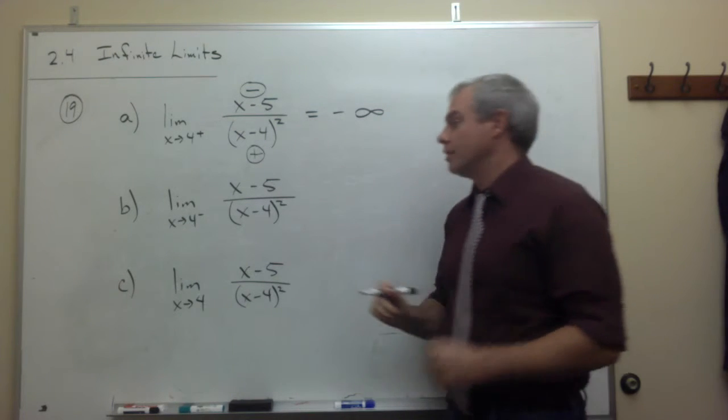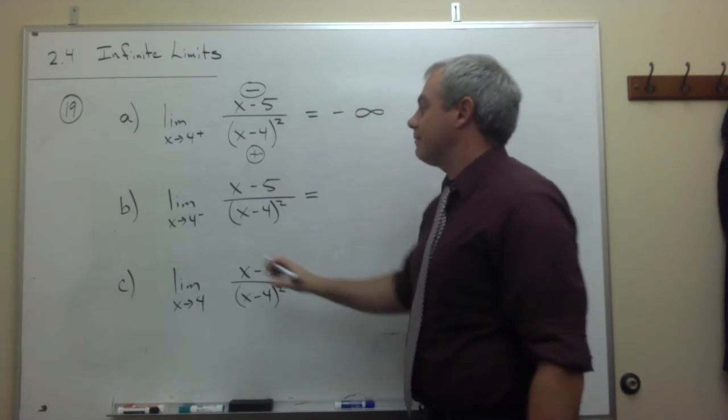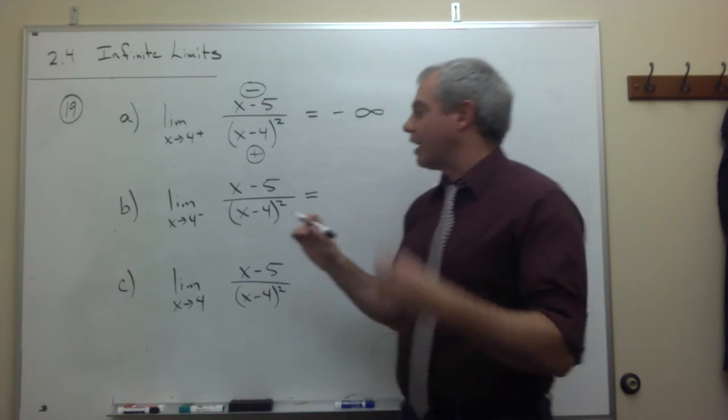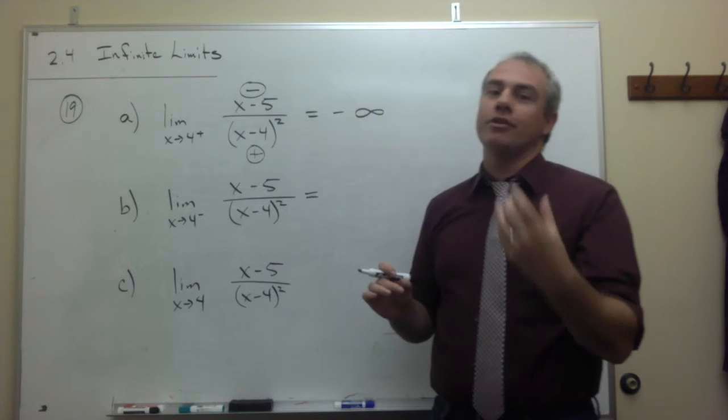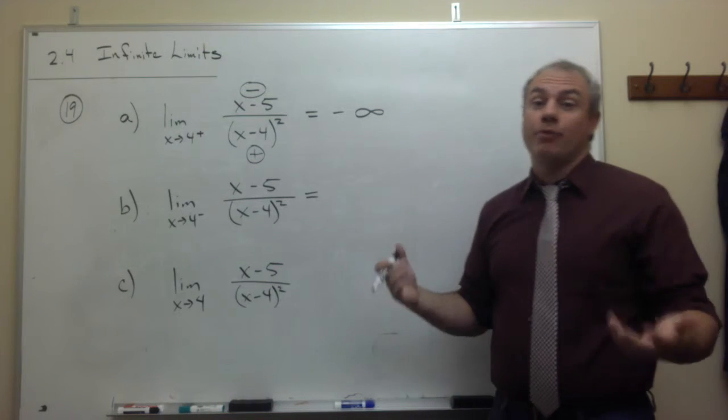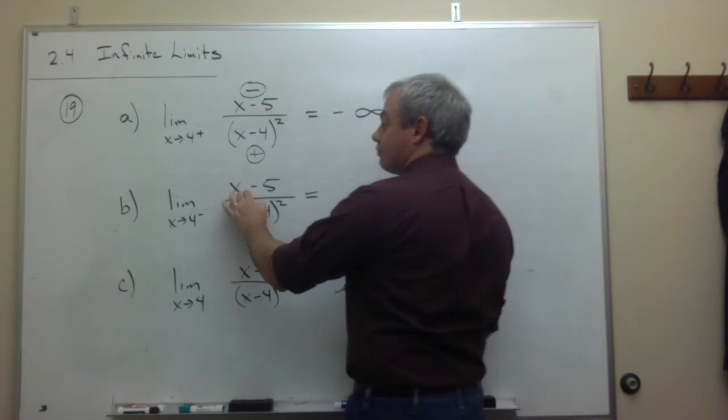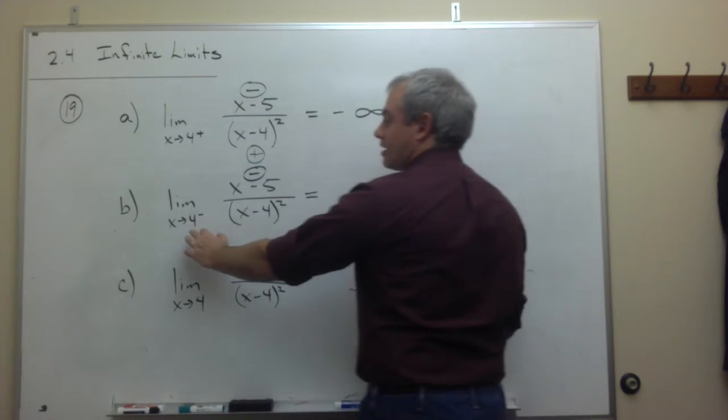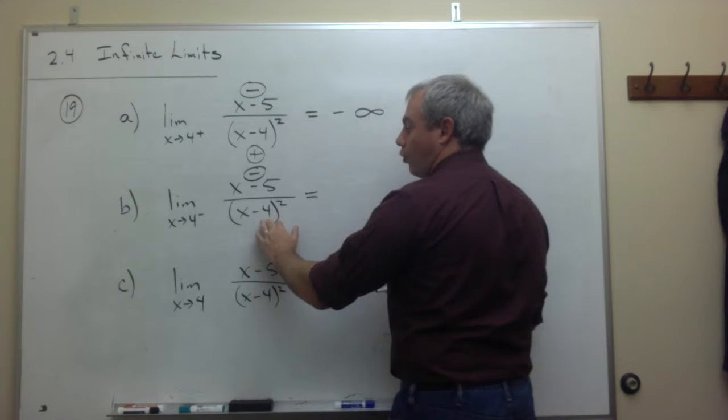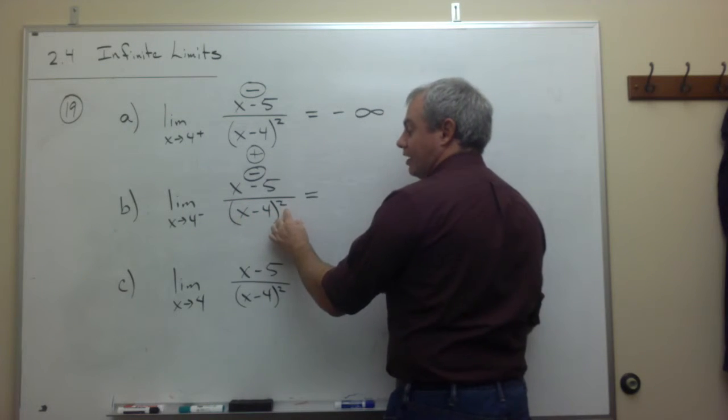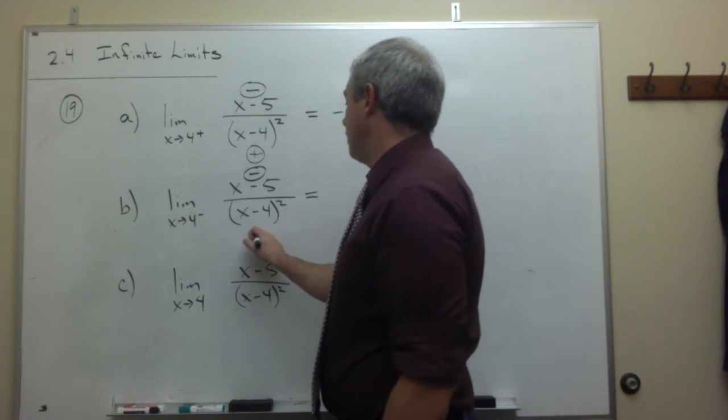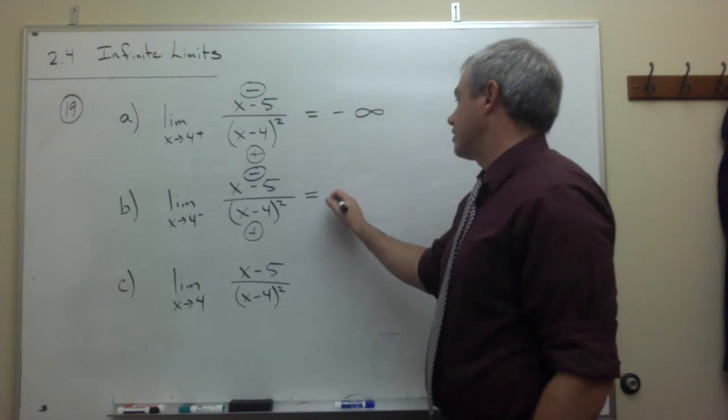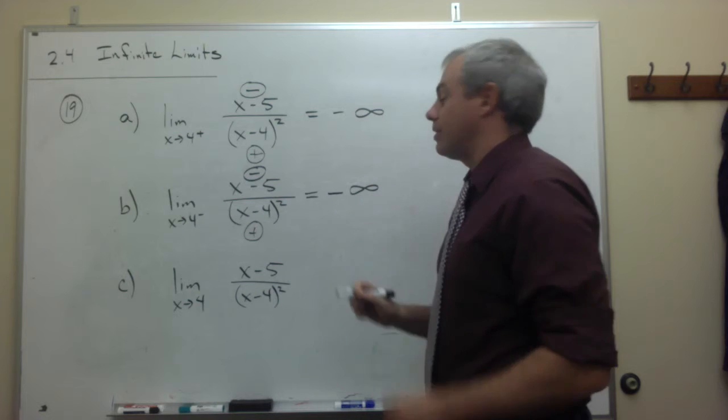Let's look at part b. Part b, I want to do the same thing, except I want to approach 4 from the left-hand side. So if I'm approaching 4 from the left, I can say, let's take something slightly smaller than 4, like 3.9, or just something a little bit smaller than 4, and subtract 5. Well, that's clearly negative. If I take something slightly smaller than 4 and subtract 4, that's negative. But then I square it. And anything squared is going to be positive. So I get a negative divided by a positive, which is negative. So the answer must be negative infinity.